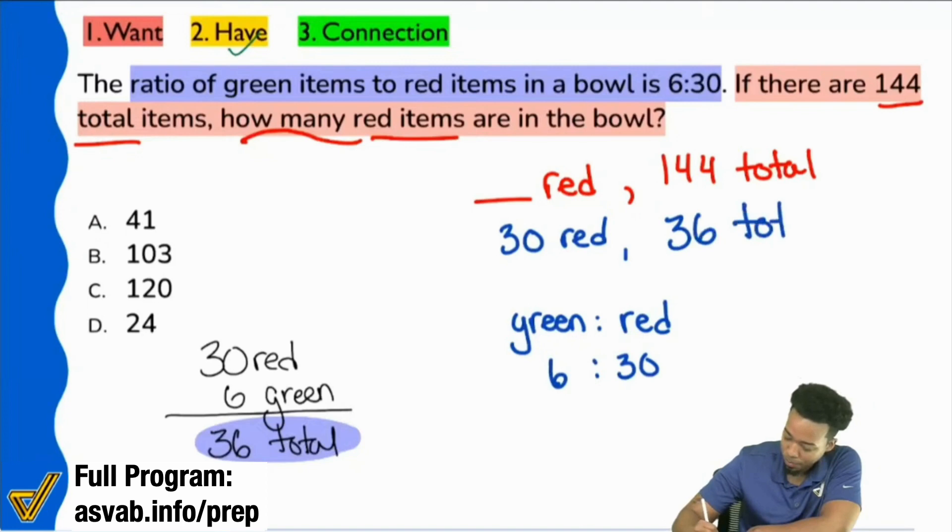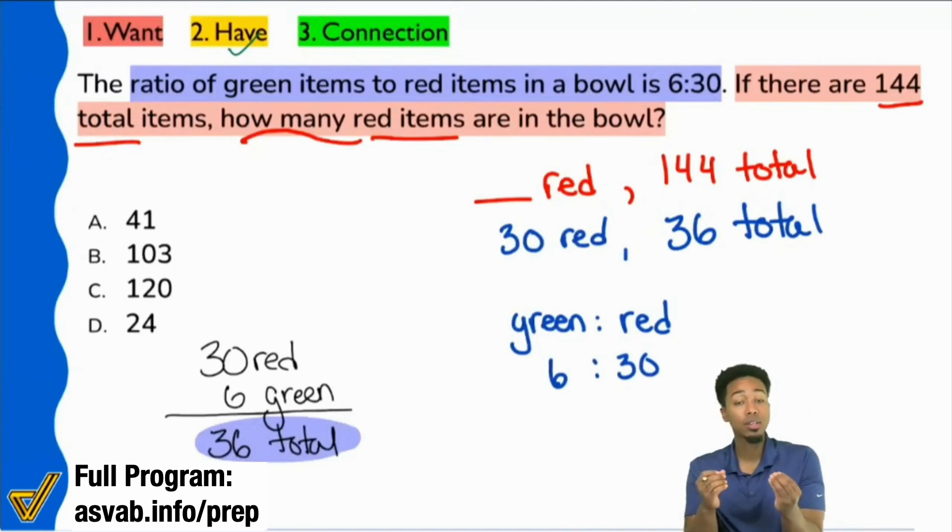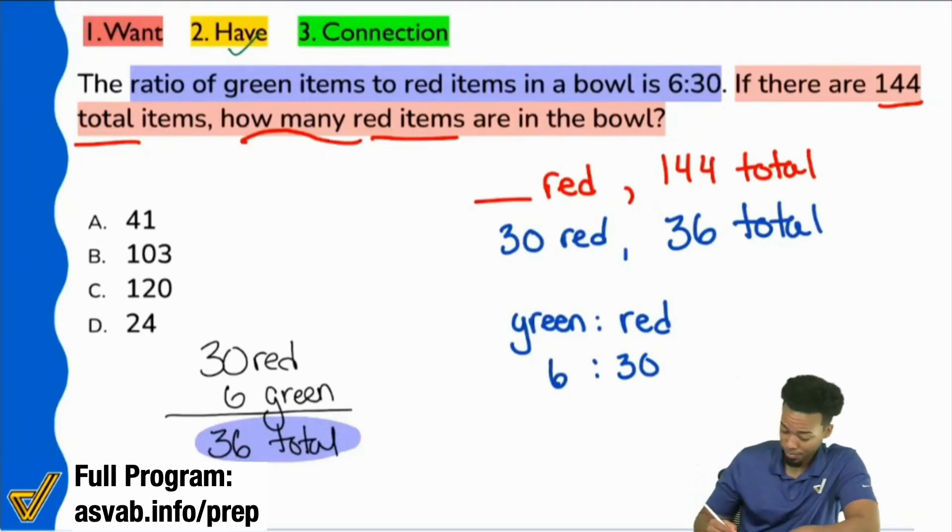Before I continue, yes or no, did that make sense? Because we have to compare the same things in the same way, and the question tells us red to total, we had to make sure that the second comparison had to be red to total. Because we had red to green, we added red and green together to get that total, the total, the sum of the parts. That's something that everyone needs to really comprehend because moving forward, now it's easy as pie because now we're good.